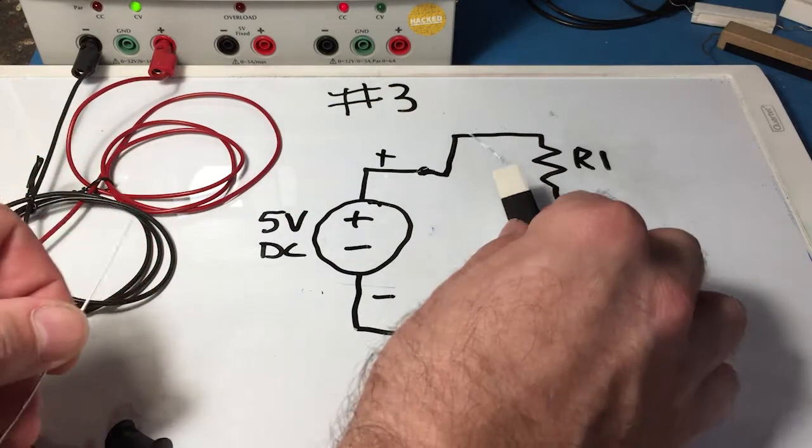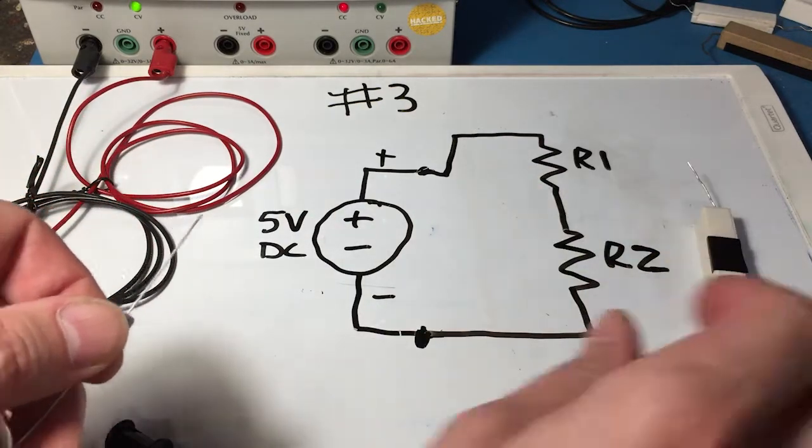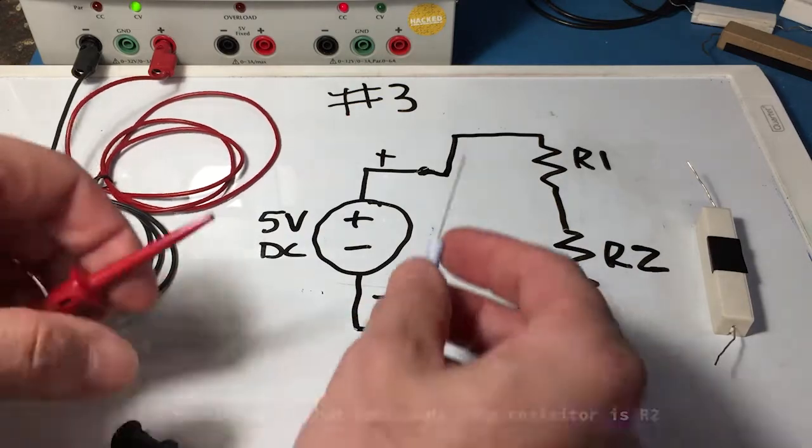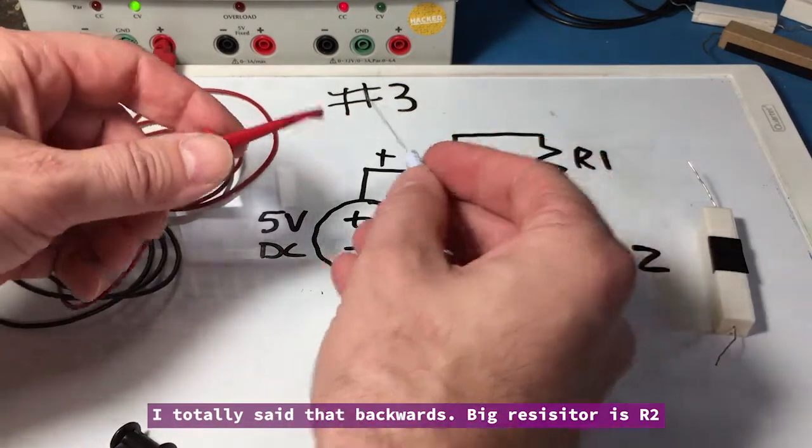So we have two different resistors and we'll call the bottom, well the big one will be R1, and then this little one right here will be R2.